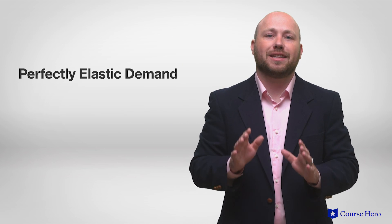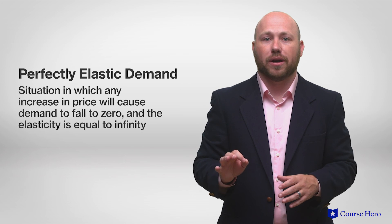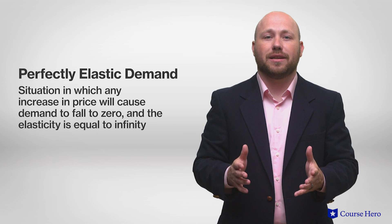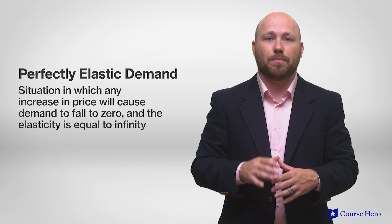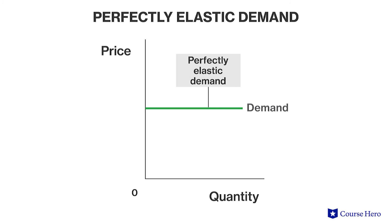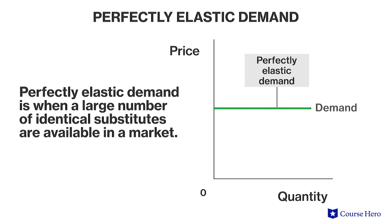In some markets, consumers have an infinite possibility of comparable products to purchase. This reflects perfectly elastic demand, in which any increase in price will cause demand to fall to zero and the elasticity equals infinity. Consumers respond to any price increase by no longer purchasing the good, and when demand is perfectly elastic, the demand curve is horizontal. Perfectly elastic demand occurs when a large number of identical substitutes are available — if one seller raises their price, consumers simply switch to an identical version from a different seller, and the quantity demanded from the first seller falls to zero.